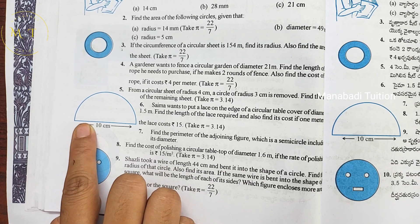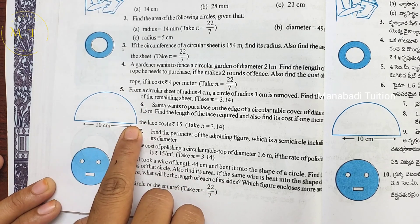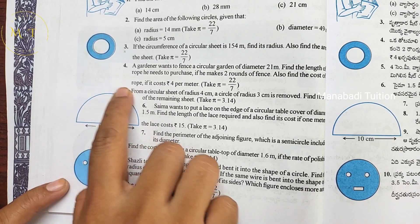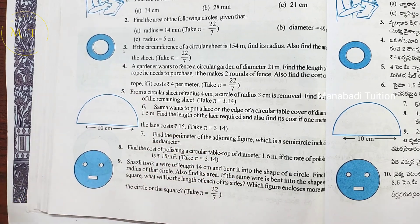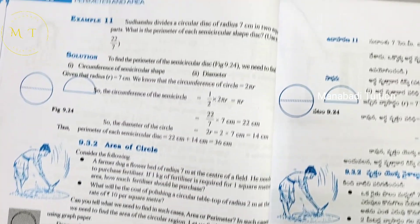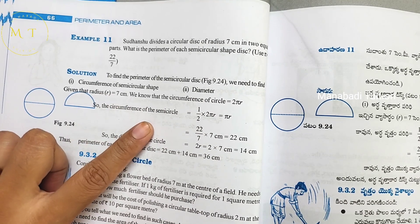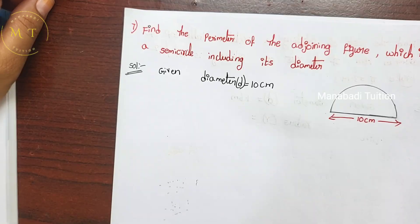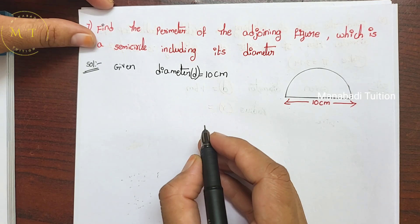Perimeter and circumference are the same. In this circle and diameter, we will find out the total. This curve is only half circle. We will follow example 11, page number 66. The diameter is given. Diameter is equal to 10 centimeters.